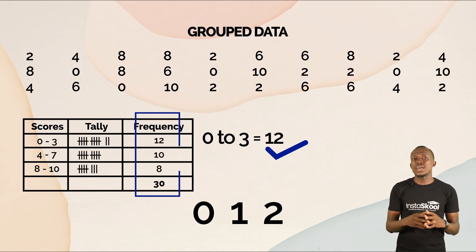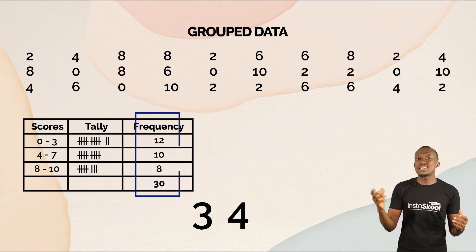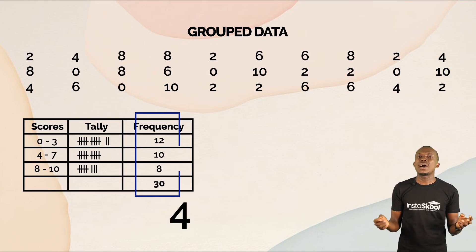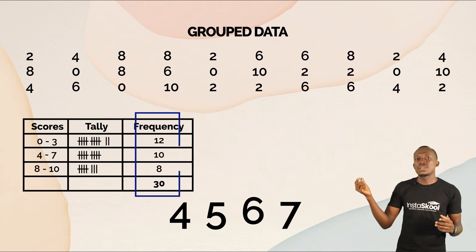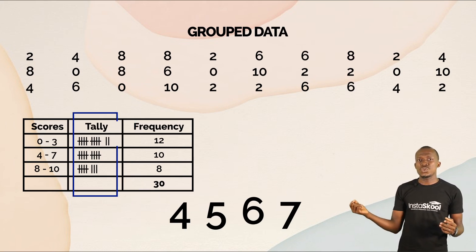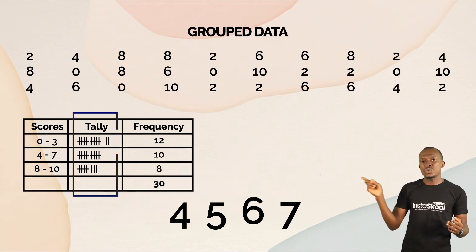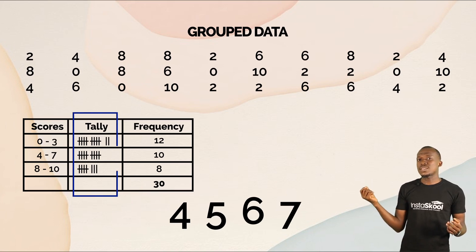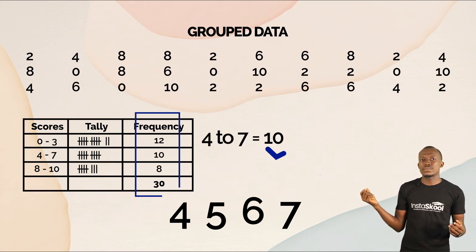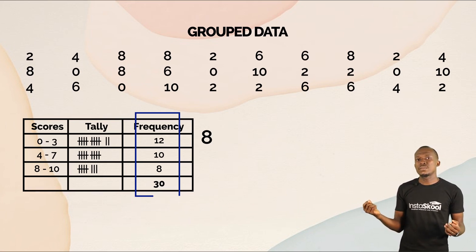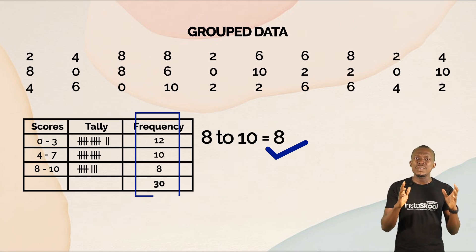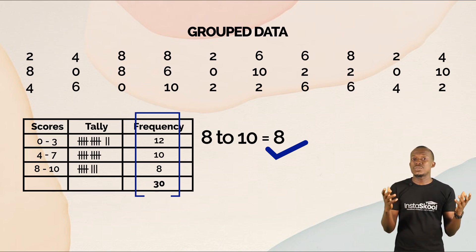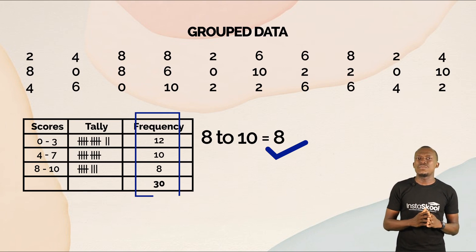Next, how many numbers do we have between four and seven? That is, how many fours, how many fives, how many sixes, and how many sevens. As you count, you represent them with strokes; when you get to a bundle, you put a fifth one across. In this class we have 10 of those numbers, and in the last class, 8 to 10, we have eight observations. You see that this table gives a very interesting and easy summary of the initial 30 observations. This is an example of group data.